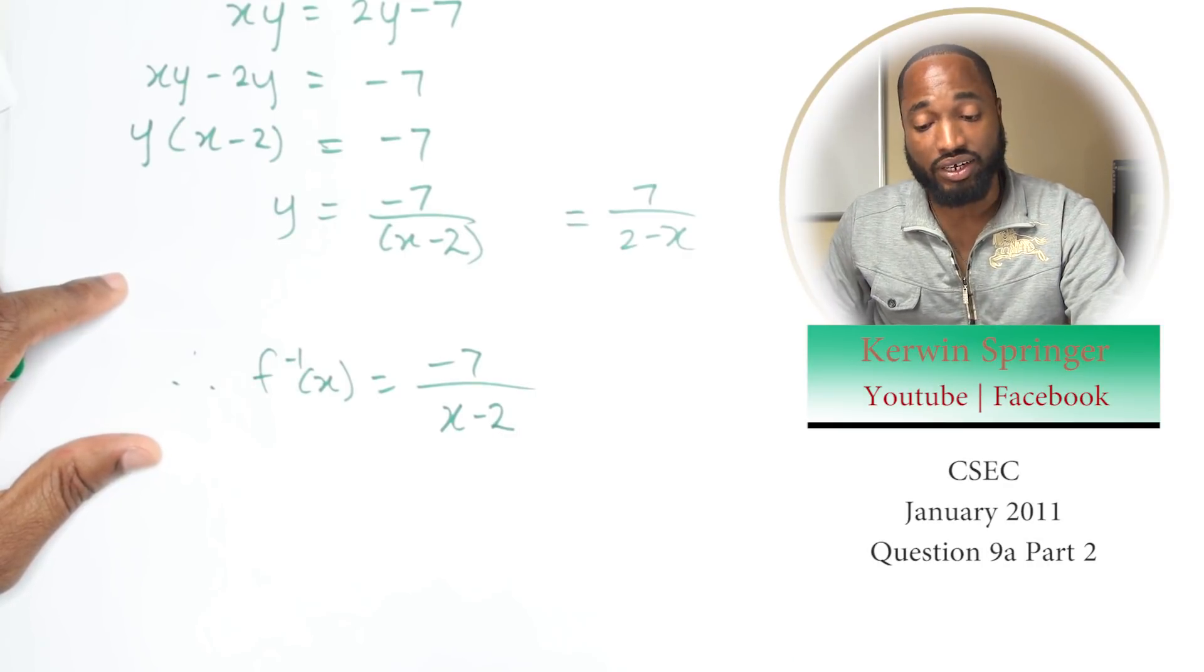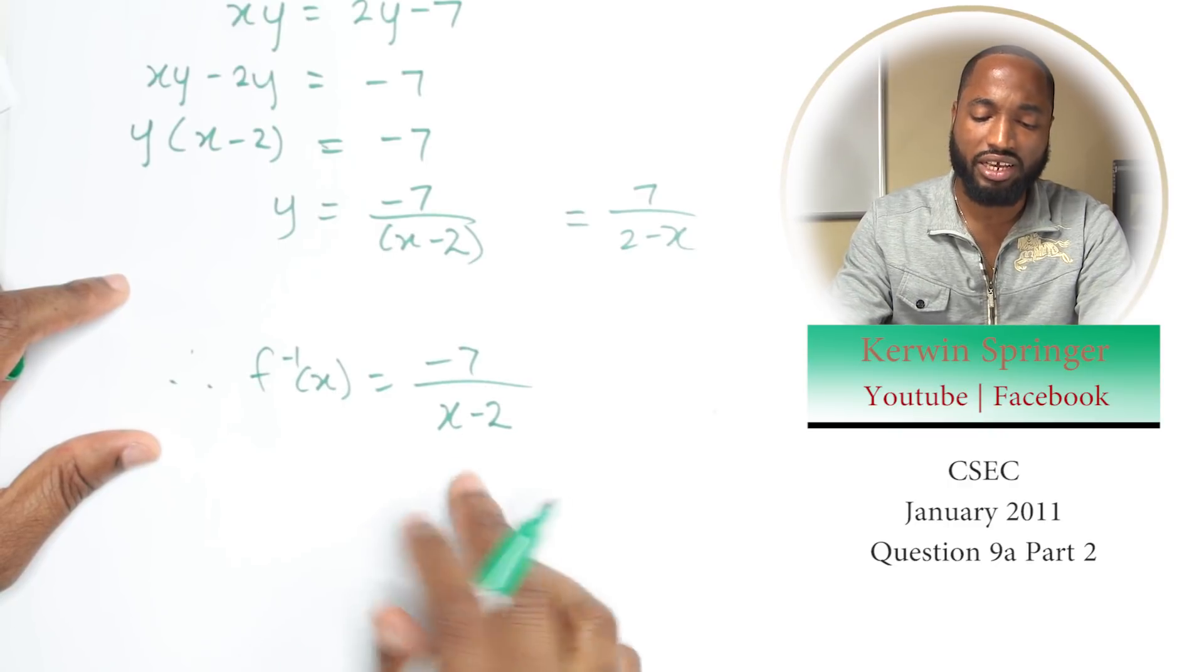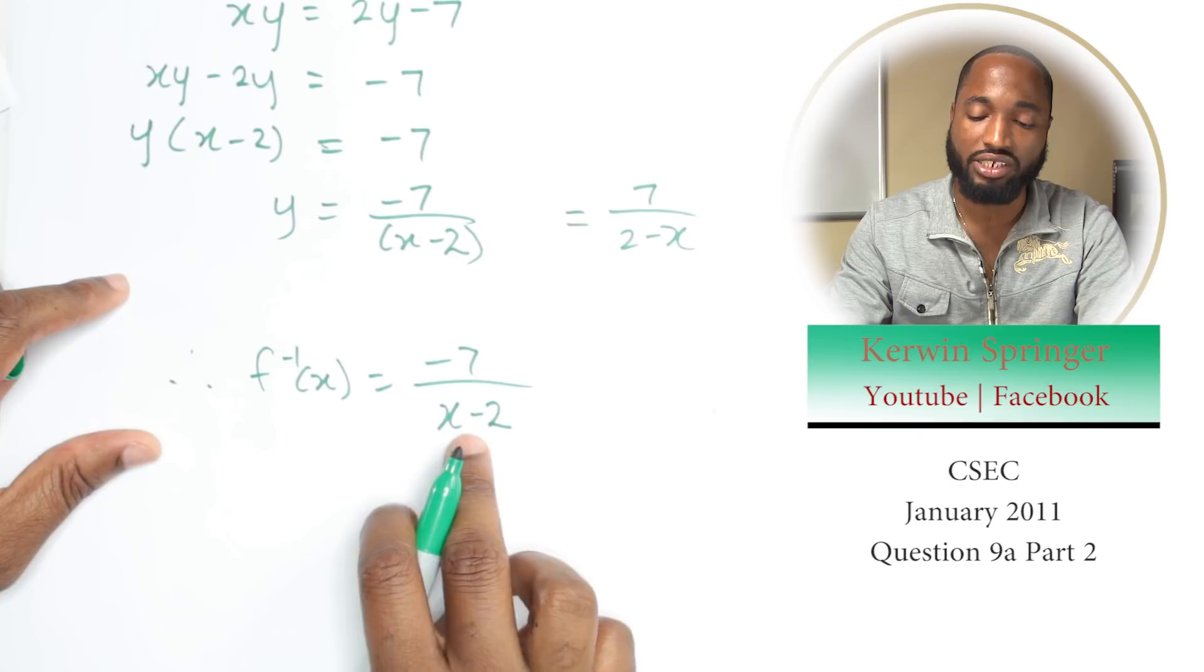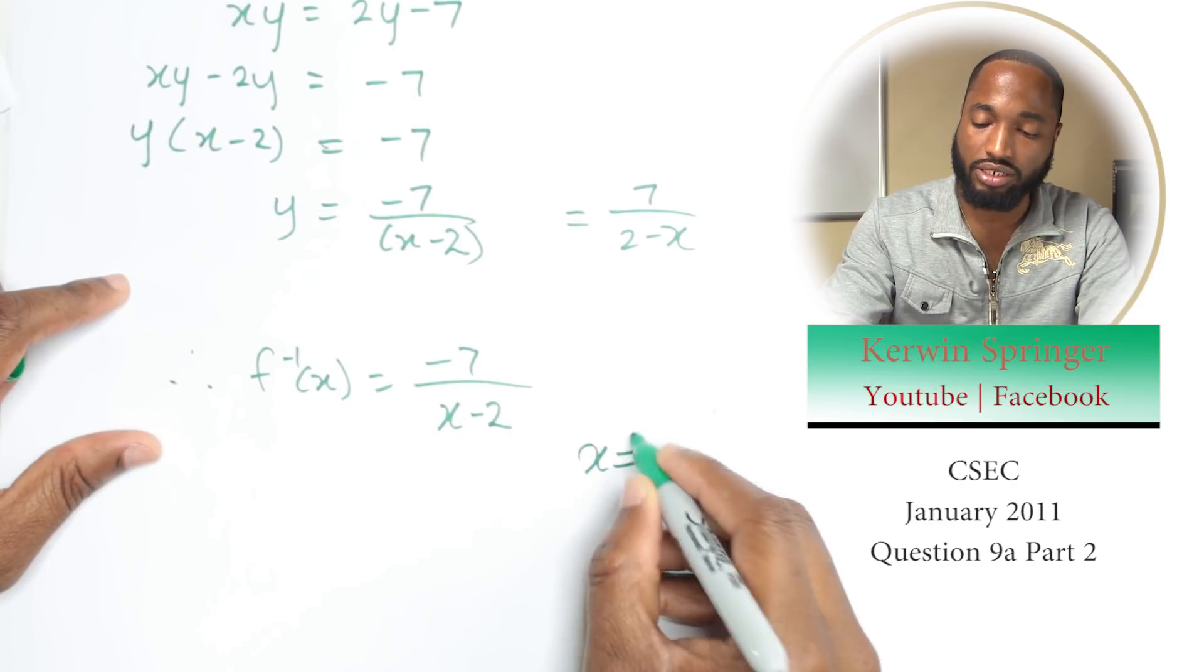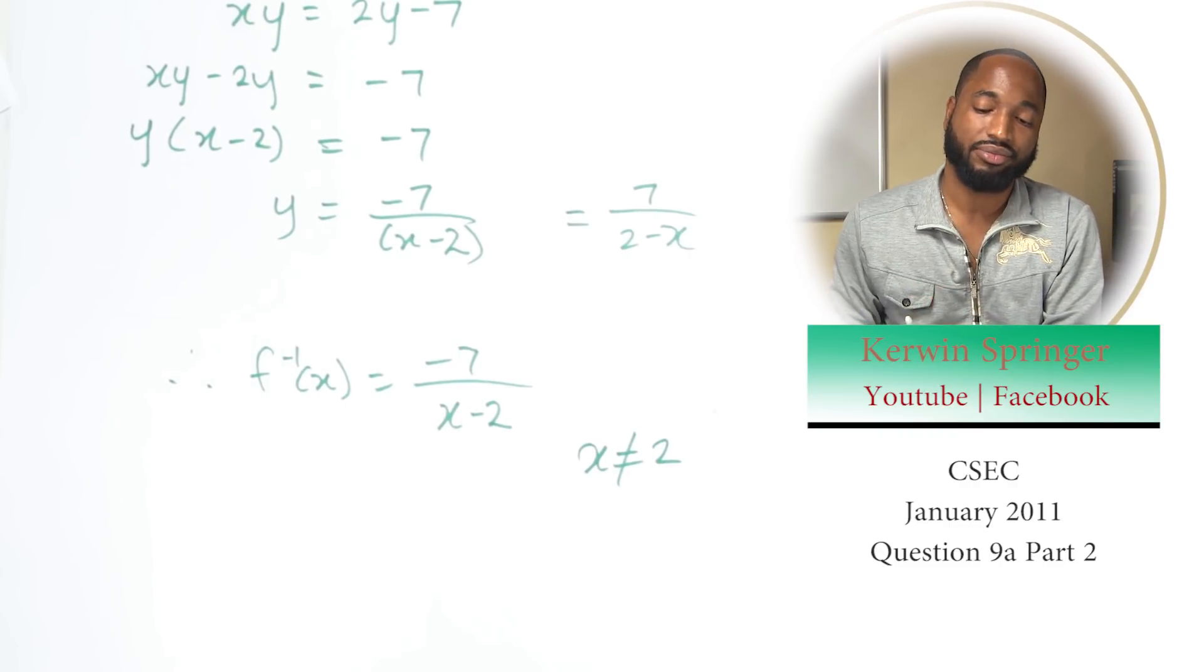There's a problem, a little thing here. We should probably state x can't be 2. If x is 2, you'll get 2 take away 2, you'll get 0, and 0 in the denominator is bad business. x is not equal to 2. If you have 0 in the denominator, put on your calculator and try to divide by 0 and tell me what happened.